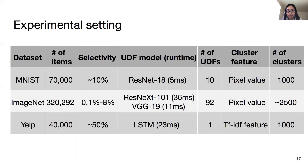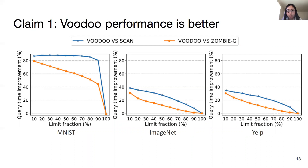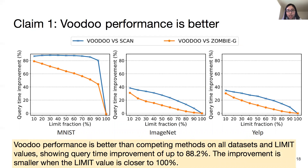To demonstrate Claim 1, we compare Voodoo with Scan and ZombieG, a generalized version of the Zombie system originally designed for feature engineering. The figure shows the average required time improvement against the limit fraction for three datasets. These numbers show that our system yields a substantial improvement — up to 88% — over competing methods for all datasets and limit values. As expected, the improvement is smaller when the limit value is closer to 100%, as there is less opportunity to skip items.